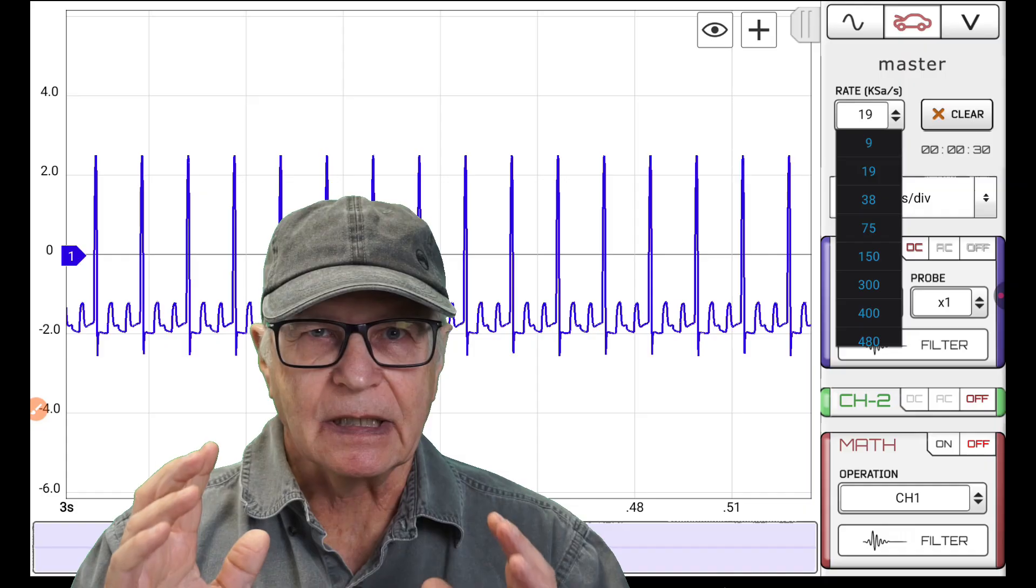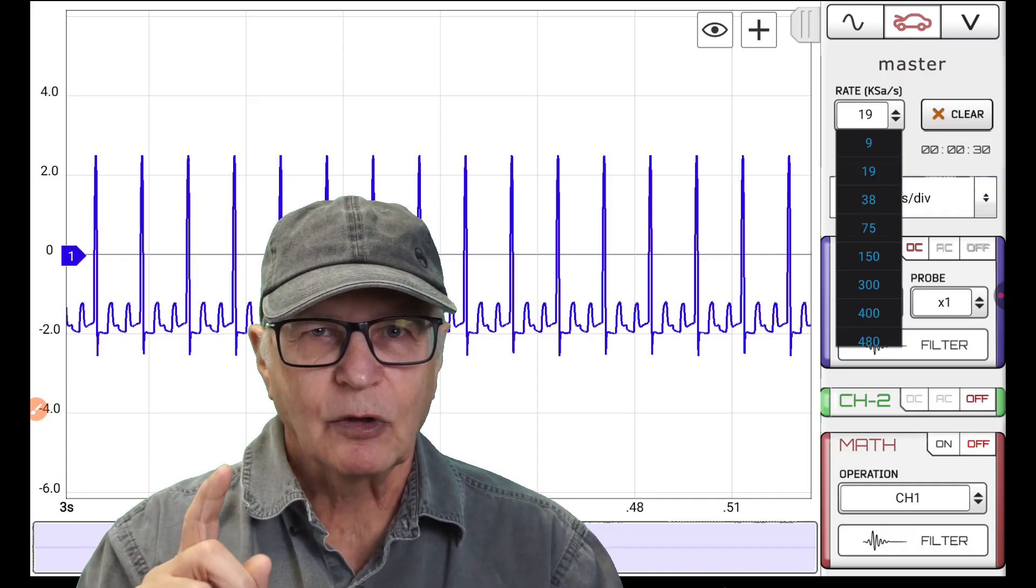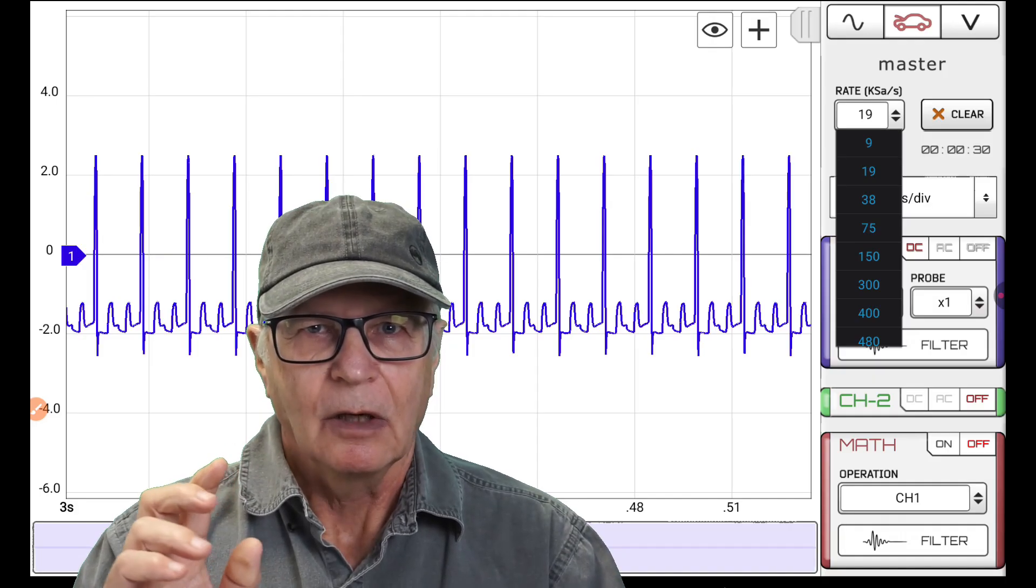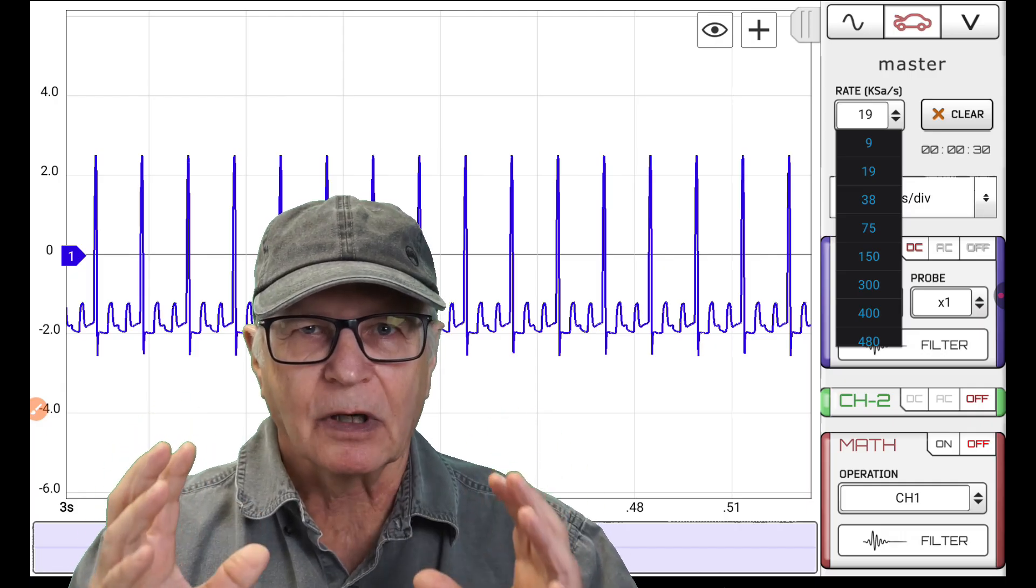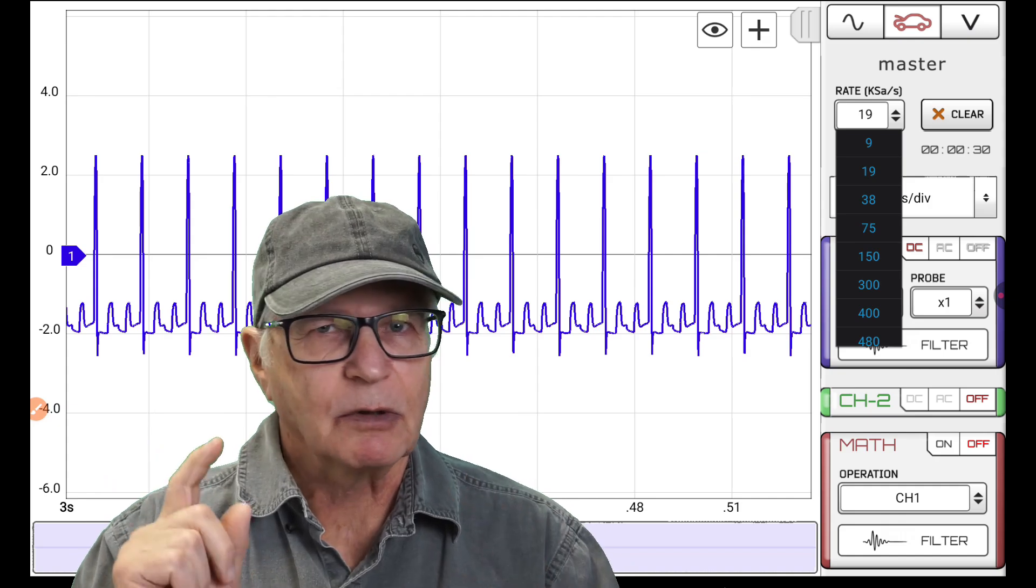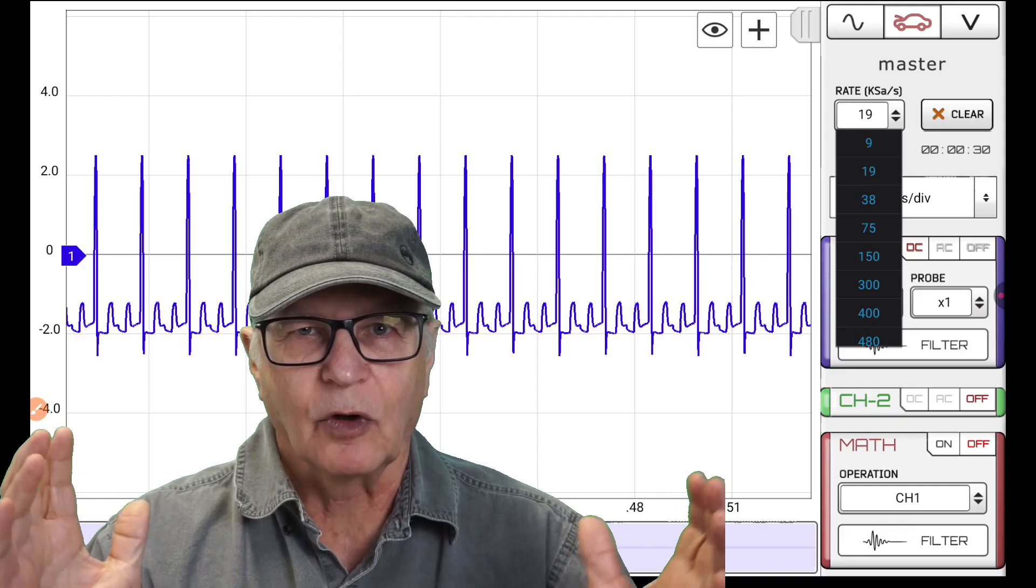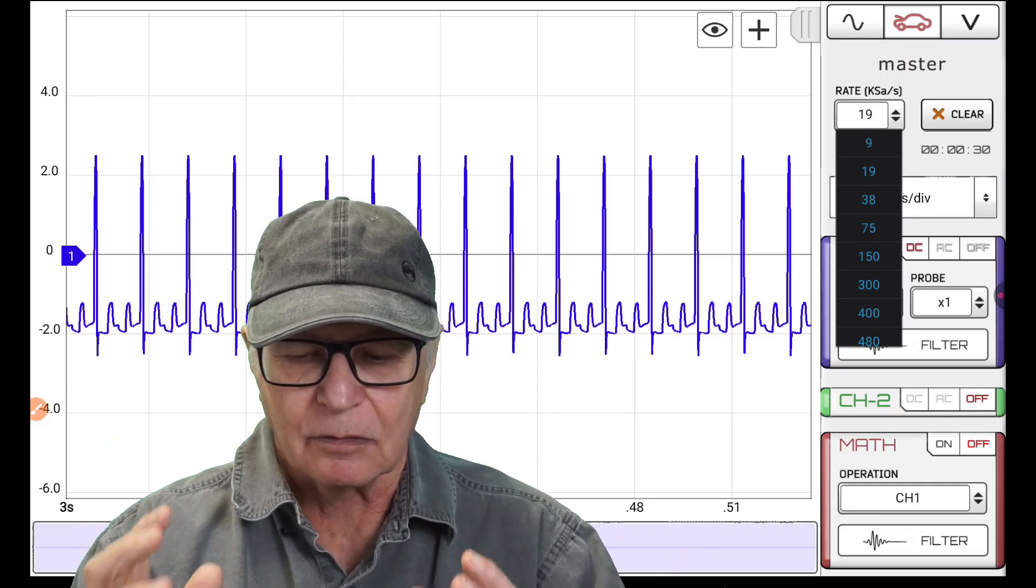The automotive module is typically a separate license for supported oscilloscopes, except those HS Siri oscilloscope on Martin's store, which have the automotive module as part of the package. That's what makes these HS Siri oscilloscope like a no-brainer, really. They're such a good value.